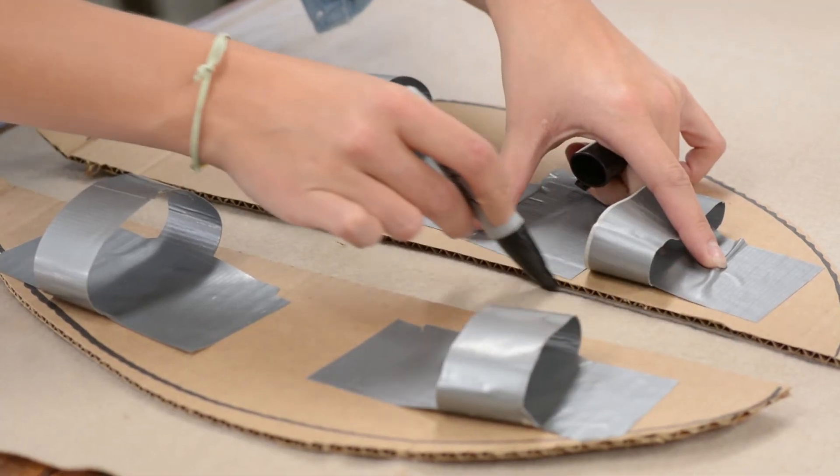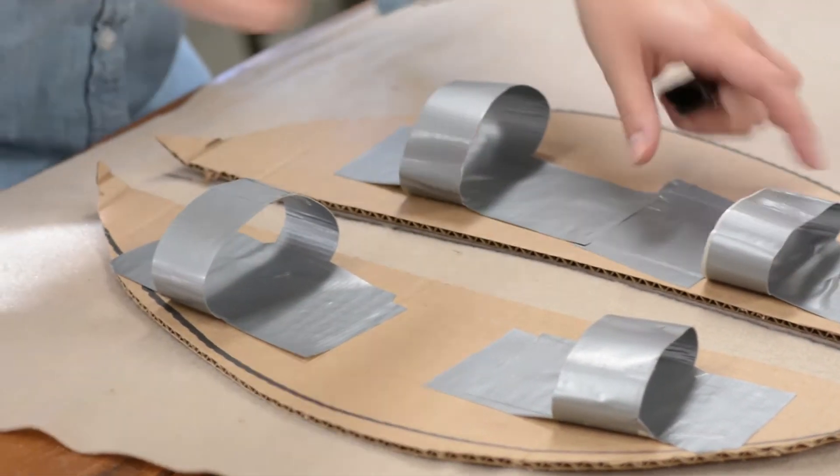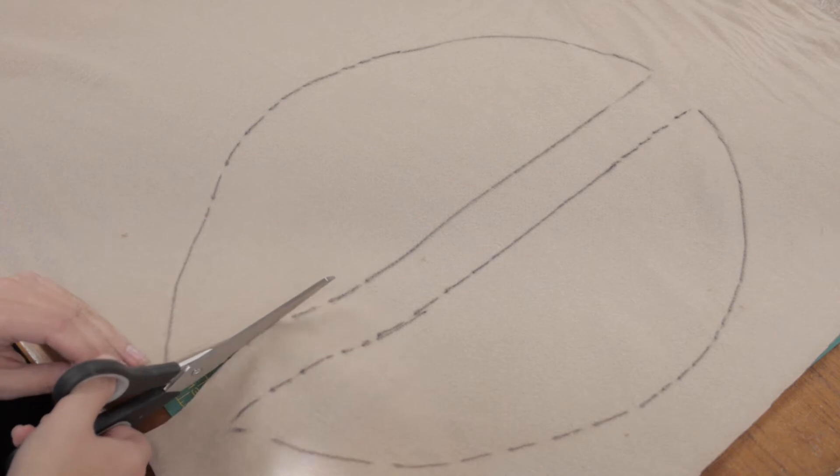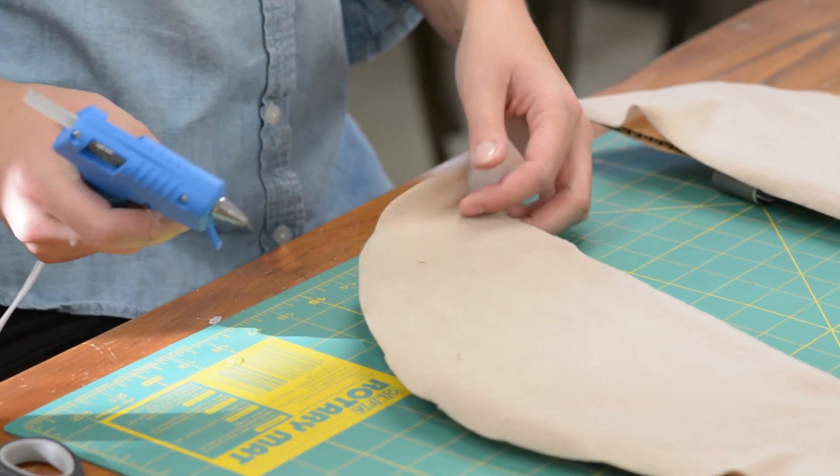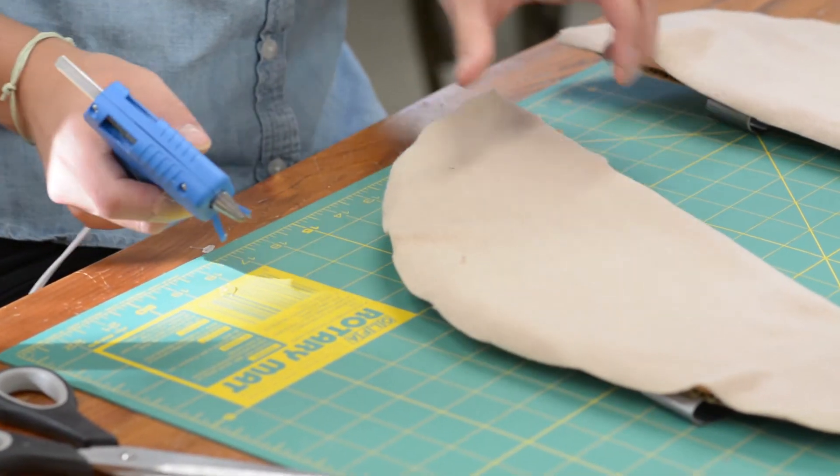Then take your fleece or felt and trace the wings onto the fabric. Cut it out and glue it onto the top of the wing where you don't have the tape loops.